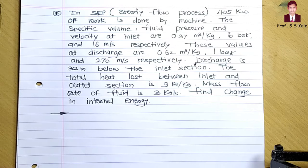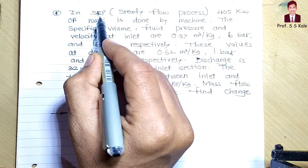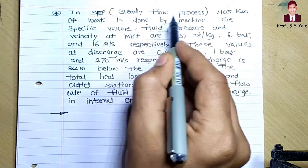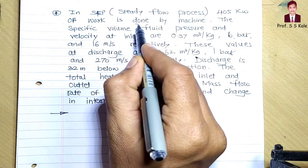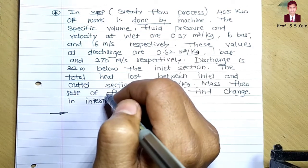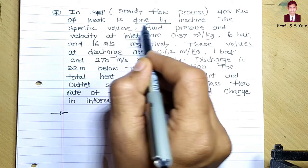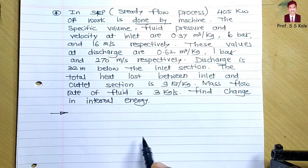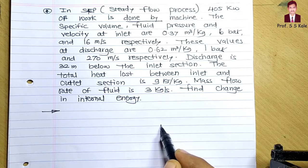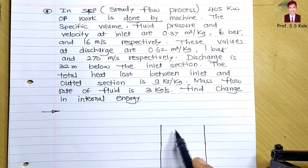Let's start with the first problem. In a steady flow process (SFP), 405 kilowatt of work is done by the machine. This phrase is very important — 'done by machine' means the machine is generating work, i.e., the machine is giving output work. I'll draw a simple symbolic representation of the machine, though I don't know whether it is a compressor, turbine, or boiler.